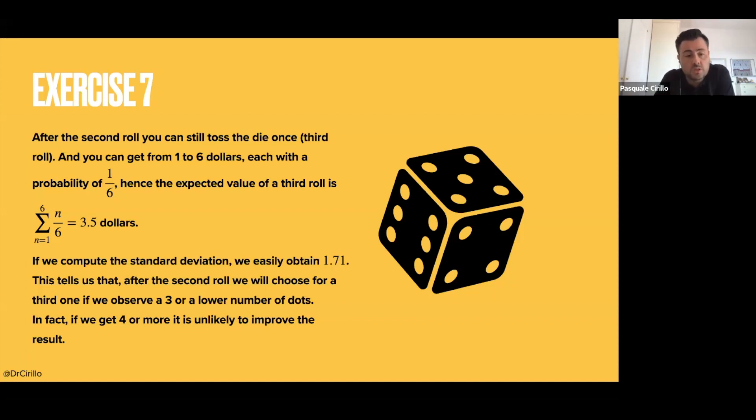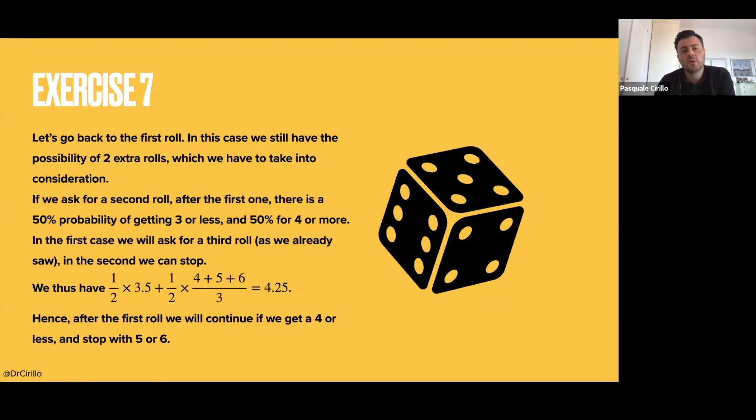But in order to reach the second toss, we have to pass the first toss. So if we go to the first toss, then we have two extra rolls in front of us, the second and the third. If we ask for the second roll after the first one, it means that there is a 50% probability that we got less than 3 in the first, and a 50% probability that we'll get more. Using the same reasoning that we have between the second and the third toss, what happens? If I observe 3 or less in the first toss, I know that in the second toss I can get a higher expected return, which is 3.5.